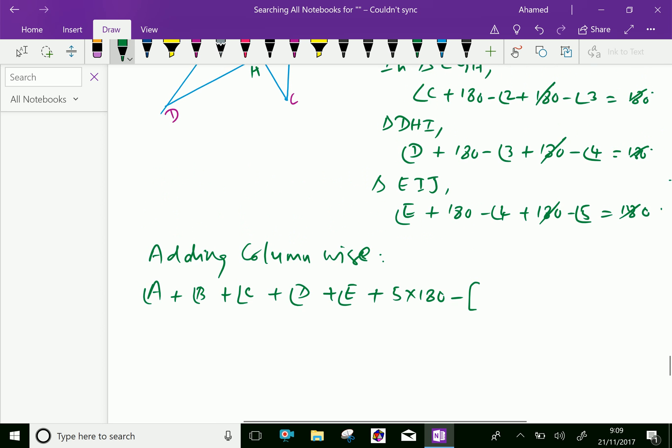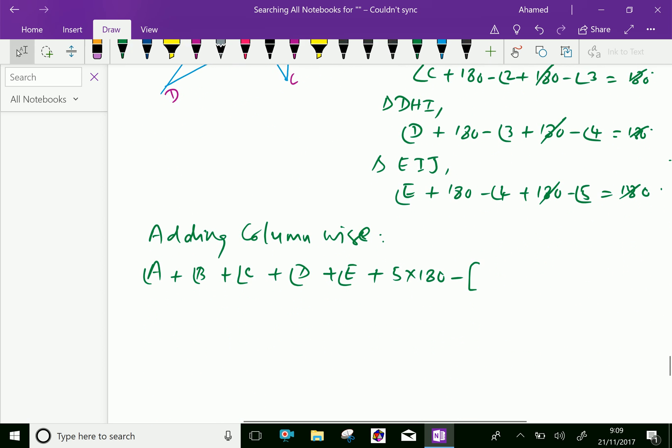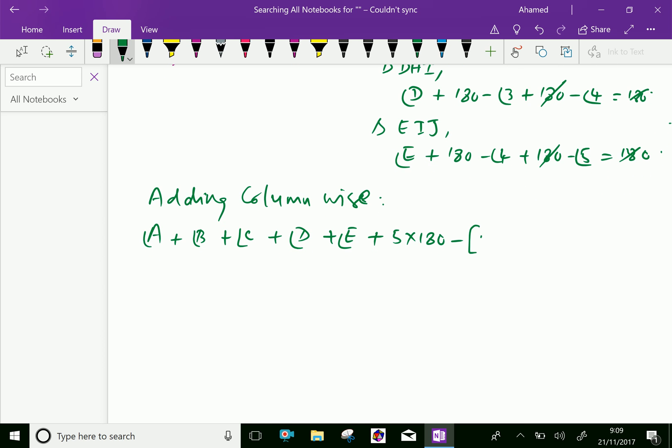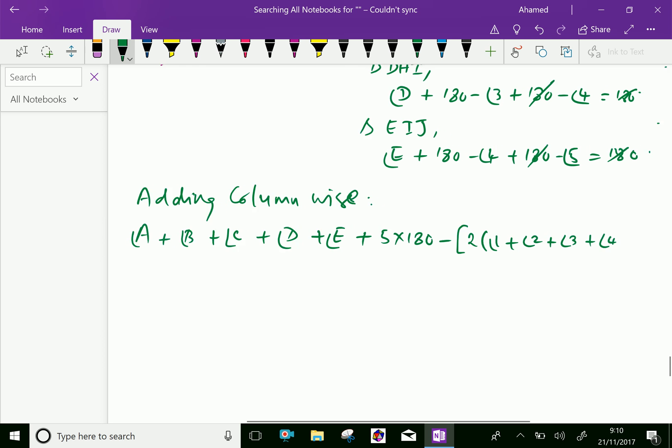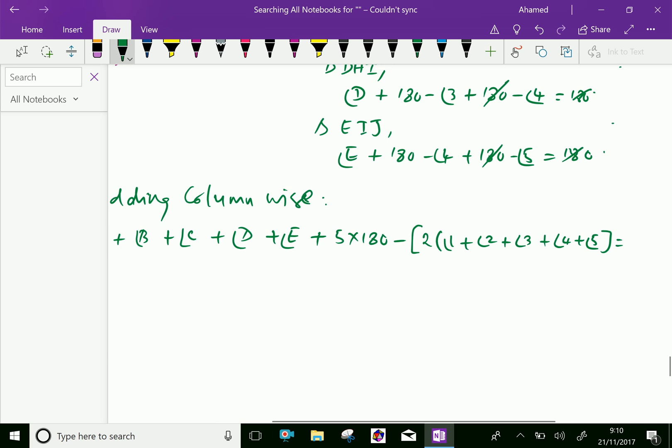here the subtraction angle 1 is twice, 2 is twice, like all other angles are twice. So we get 2 into angle 1 plus angle 2 plus angle 3 plus angle 4 plus angle 5 equal right side 0.